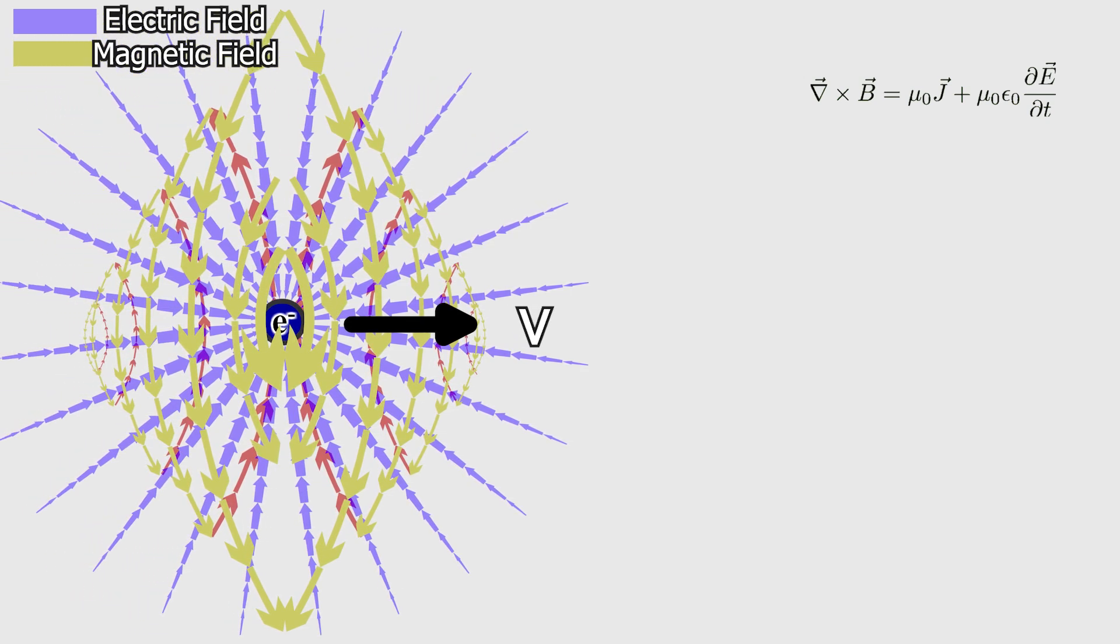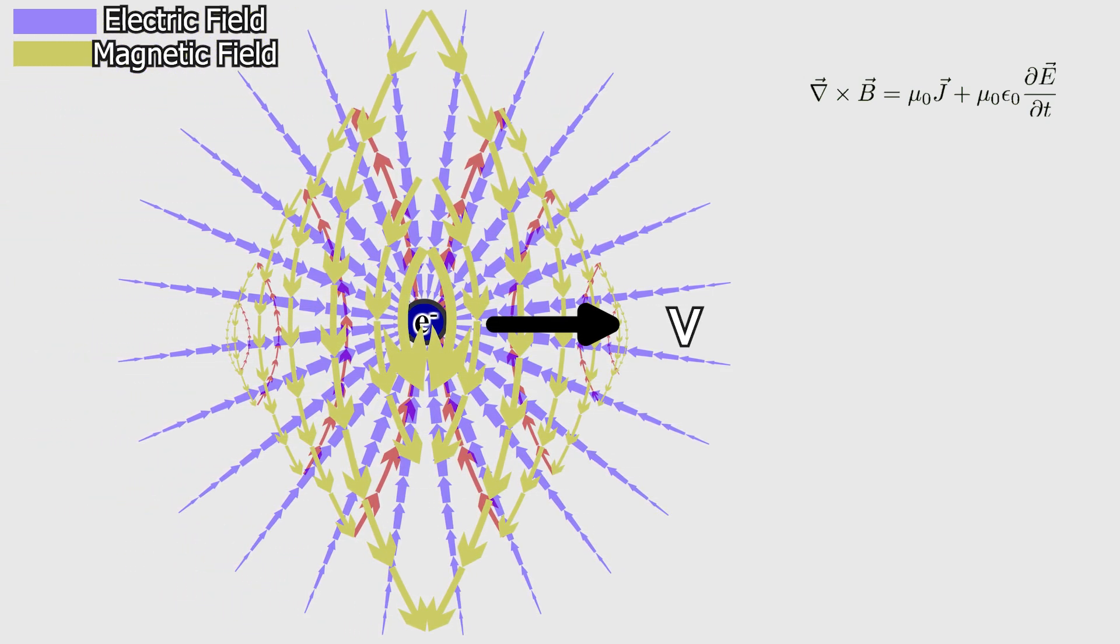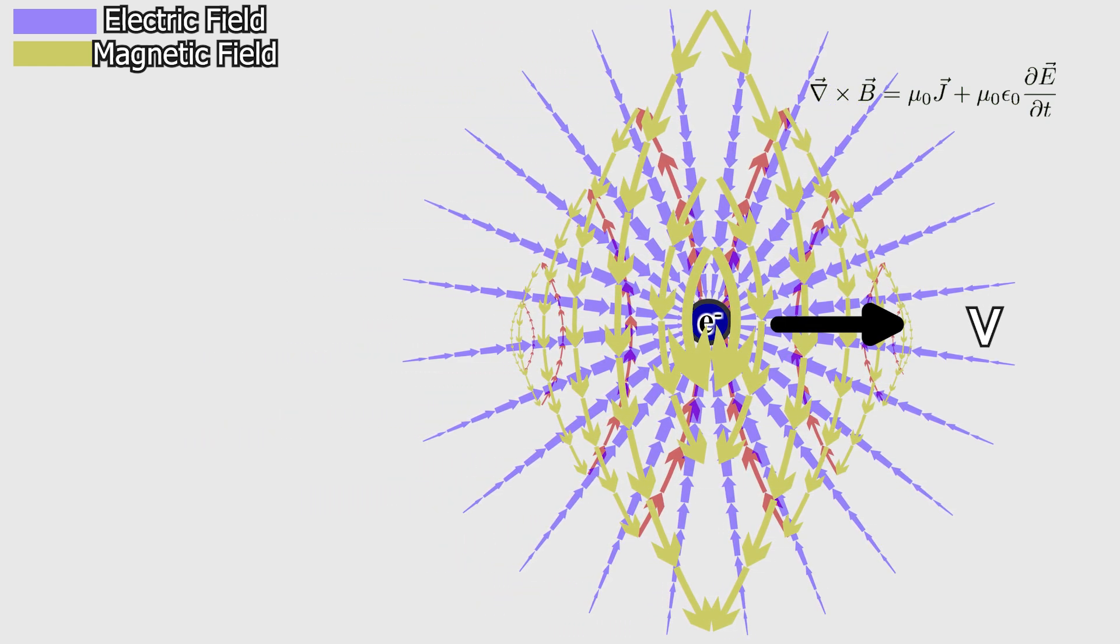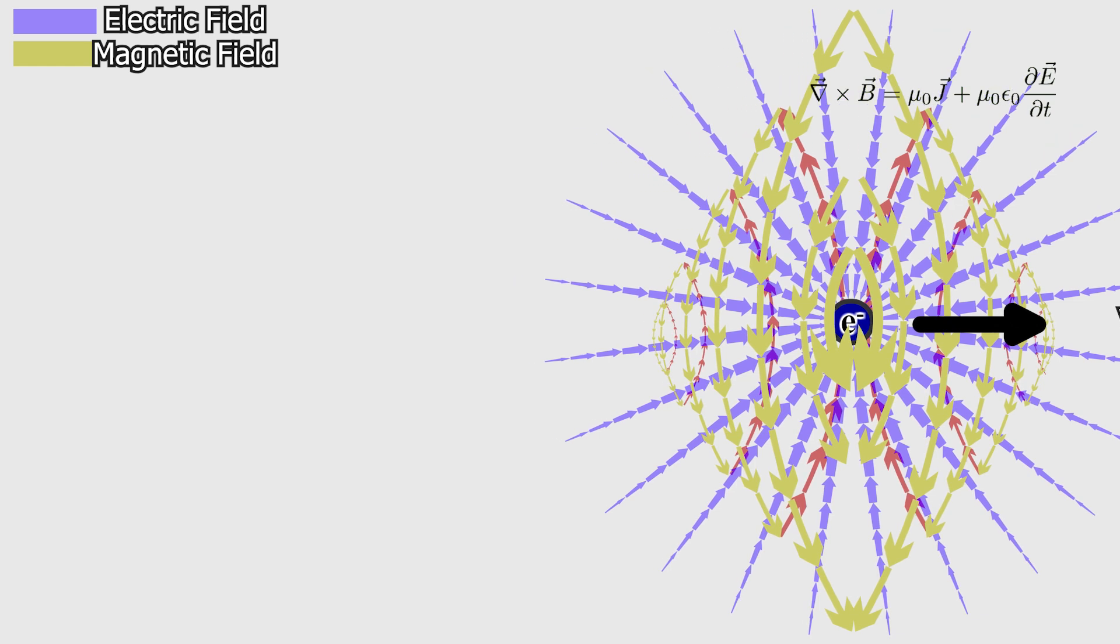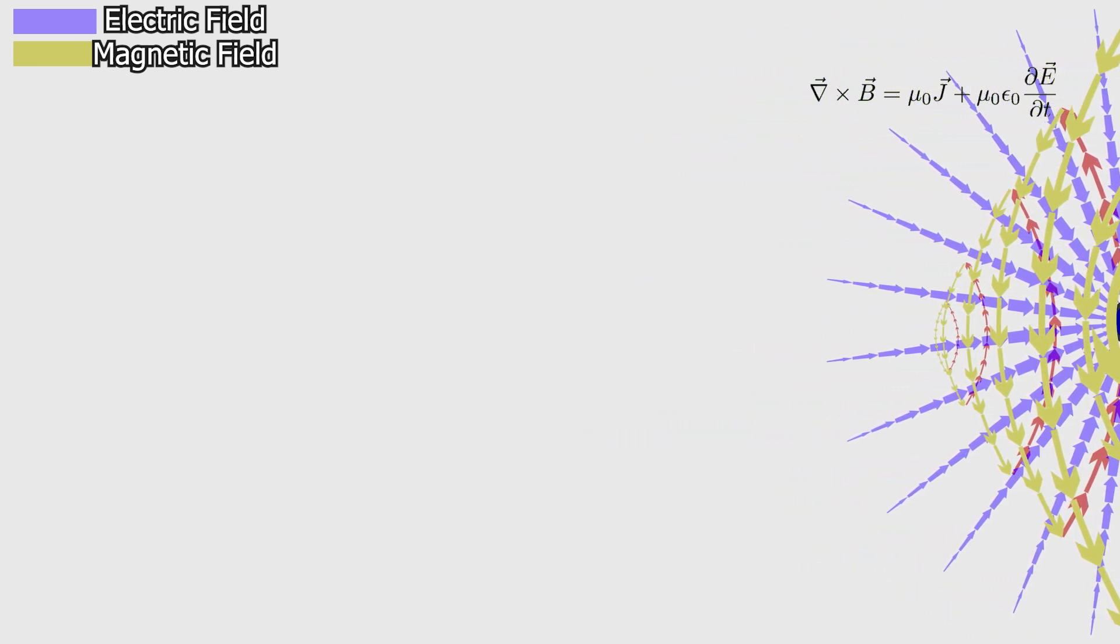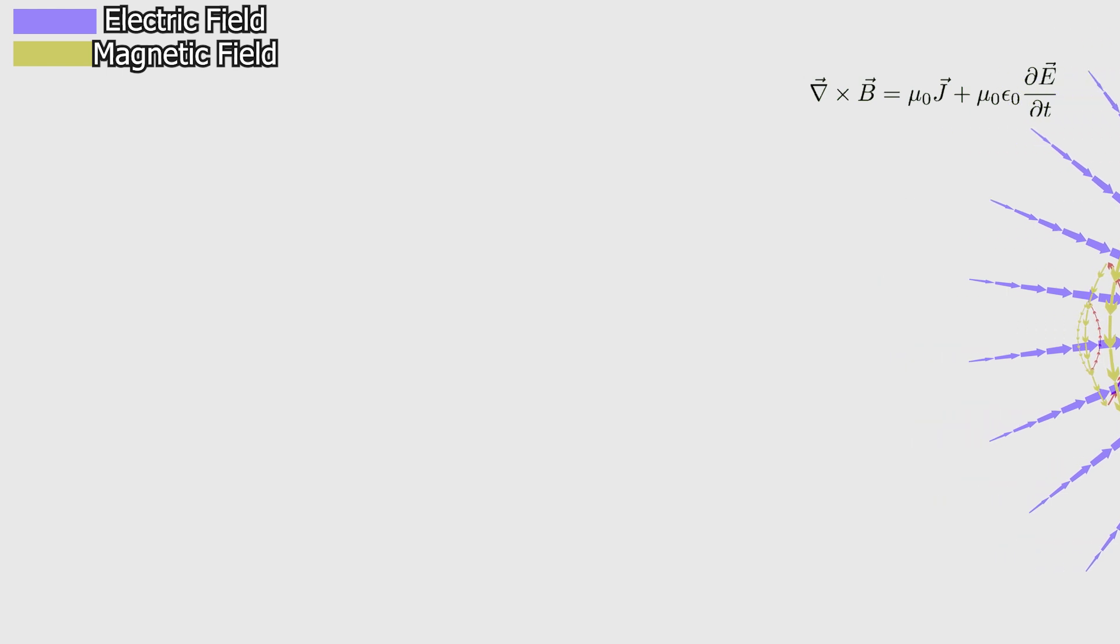If the electron is moving along the x-axis with velocity v, the direction of the magnetic field it generates can be determined by Maxwell's equations, or more intuitively, by the right-hand rule. The magnetic field points out of the plane below the path of motion and into the plane above it.